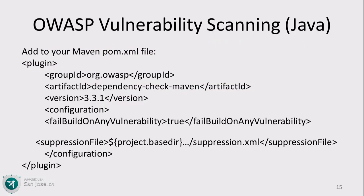This is what I did with my project, Apache Fortress — a Java application that uses Maven. I just dropped a Maven plug-in into the POM file and execute the scan before release. If there are any vulnerable libraries, like say if I was using Apache Struts — which I'm not — it would find it and spit it out to you.